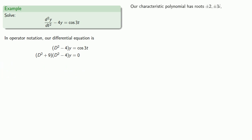And so our characteristic polynomial has roots plus or minus 2i from the original homogeneous part, and plus or minus 3i which comes from the annihilator.